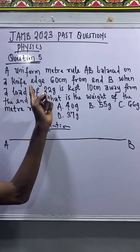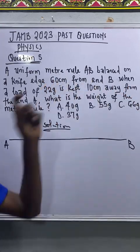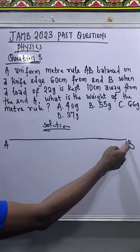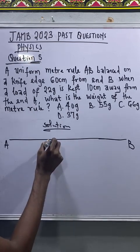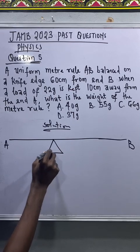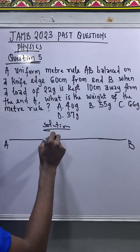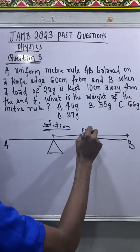It is balanced on a knife edge 60 centimeter from end B. So that means from end B we measure 60 centimeter, so that's where the balance is at, that's where they put the pivot. So that means from here to end B we have 60 centimeter.